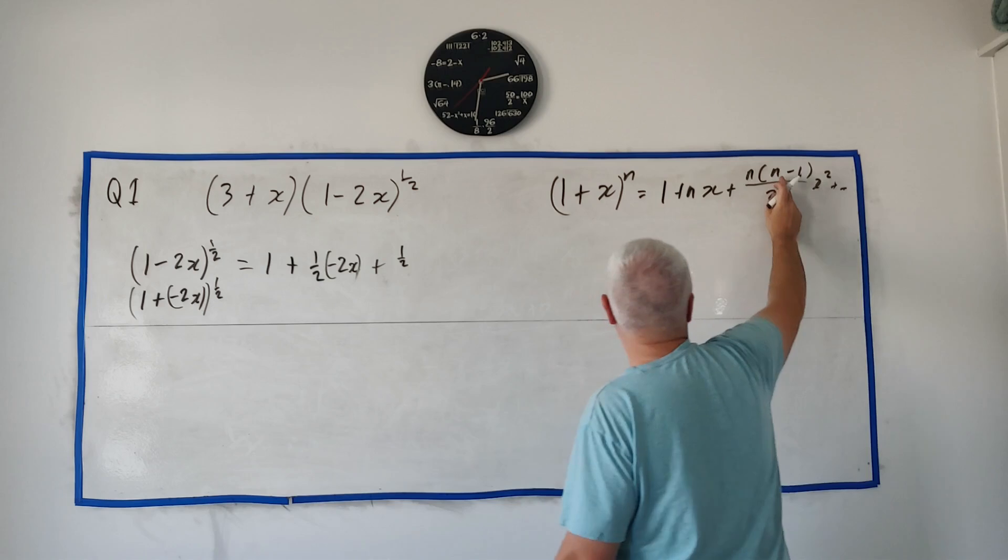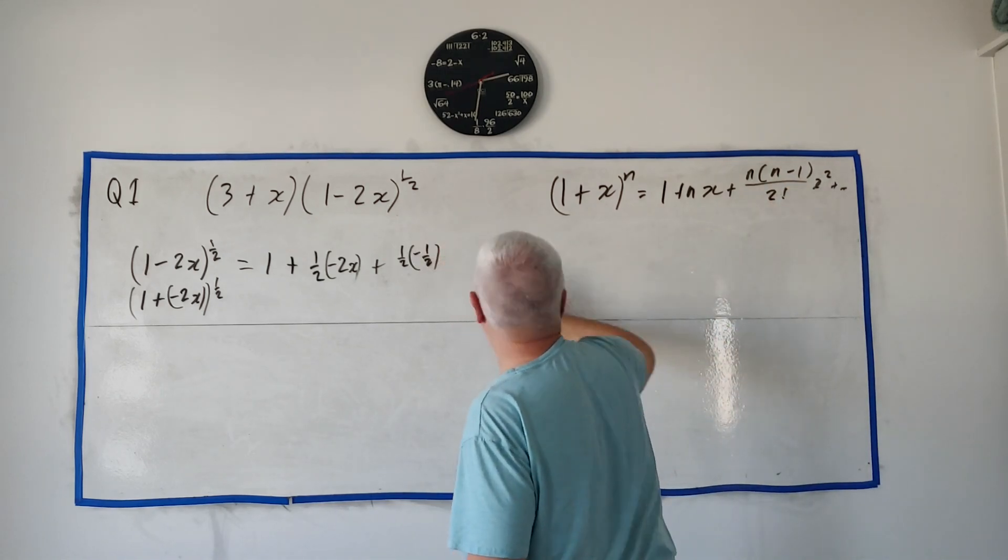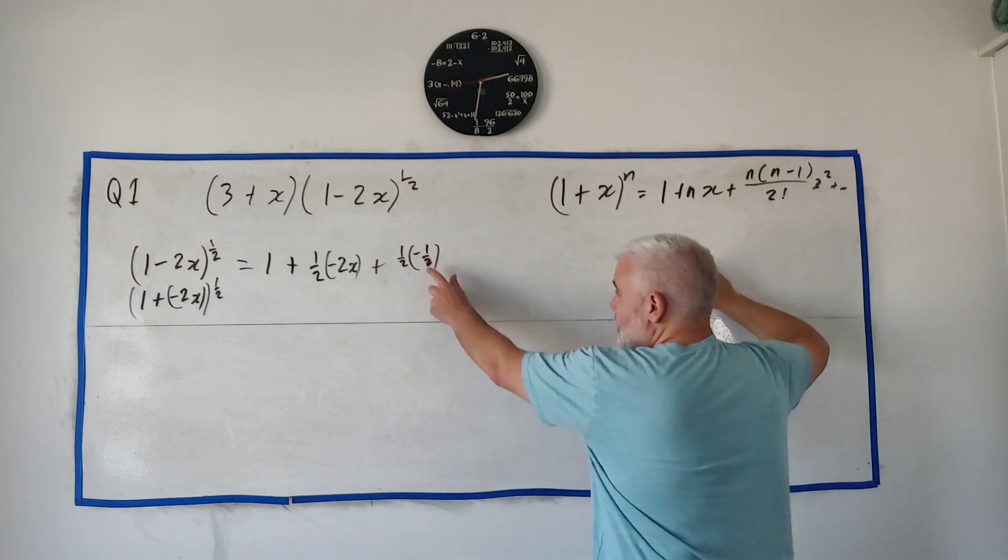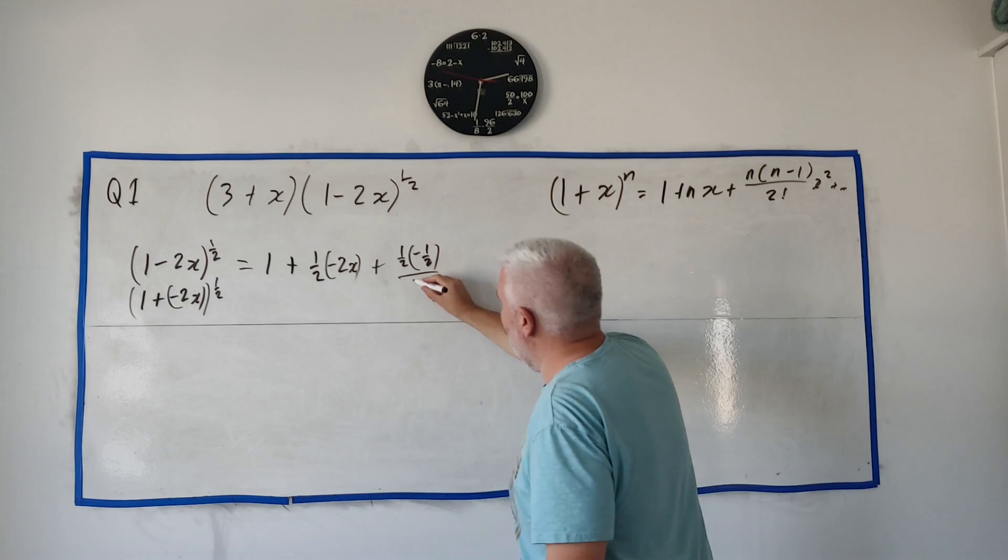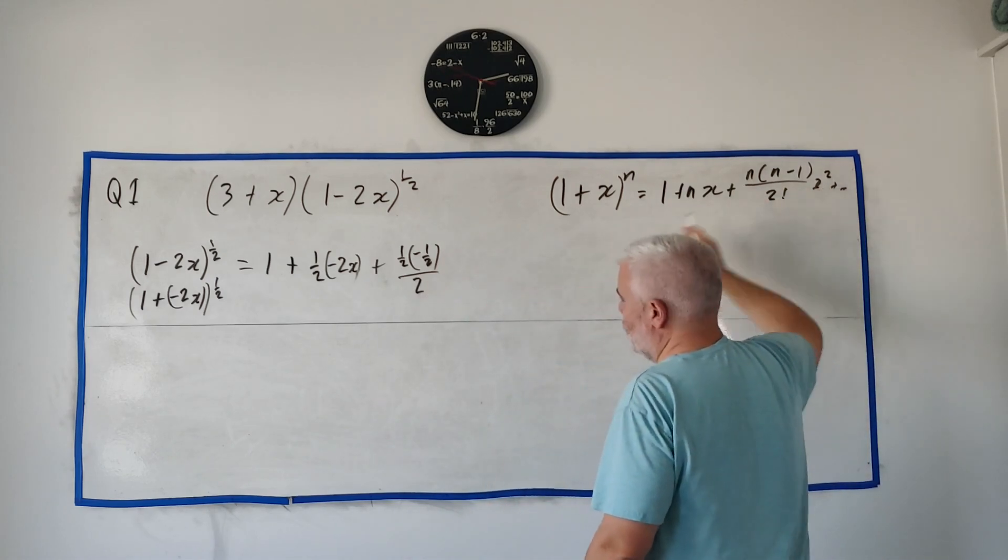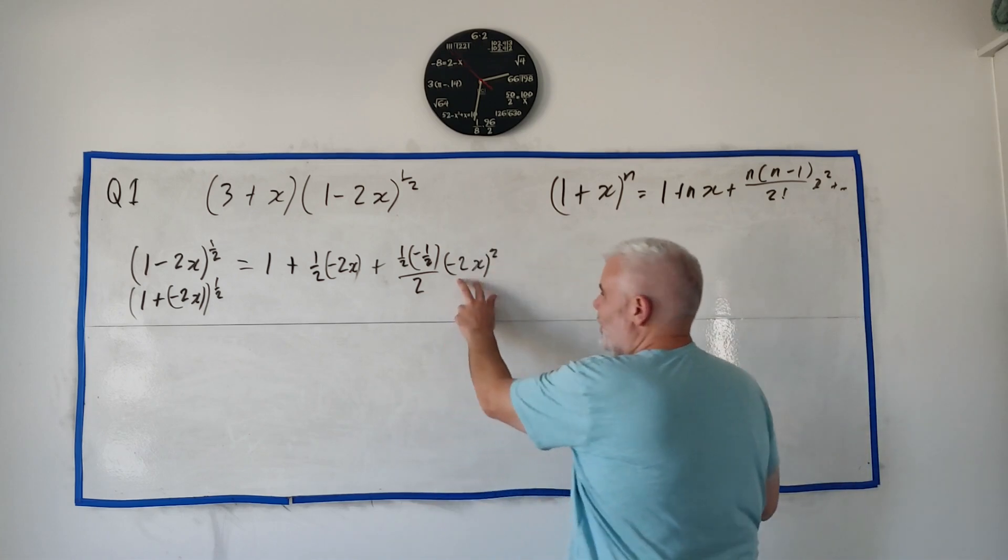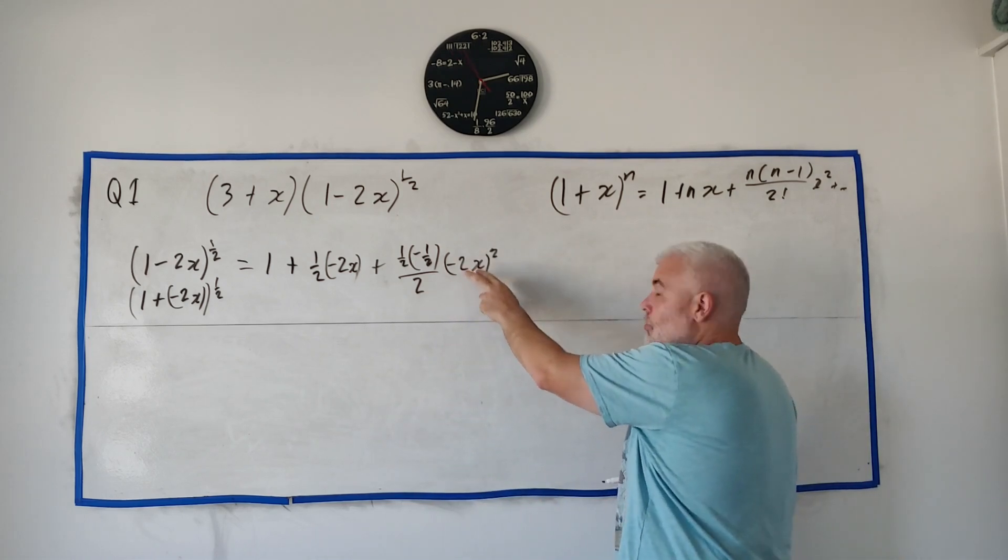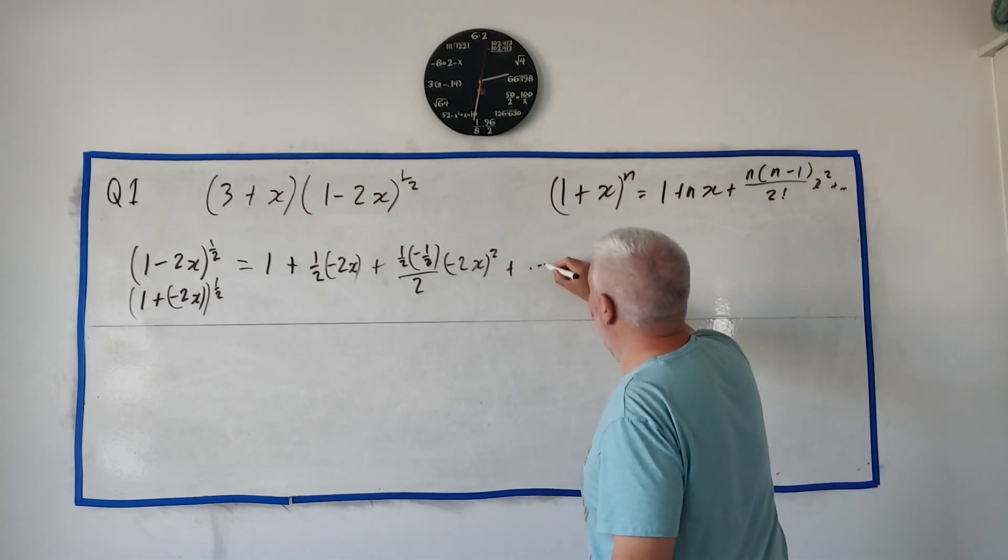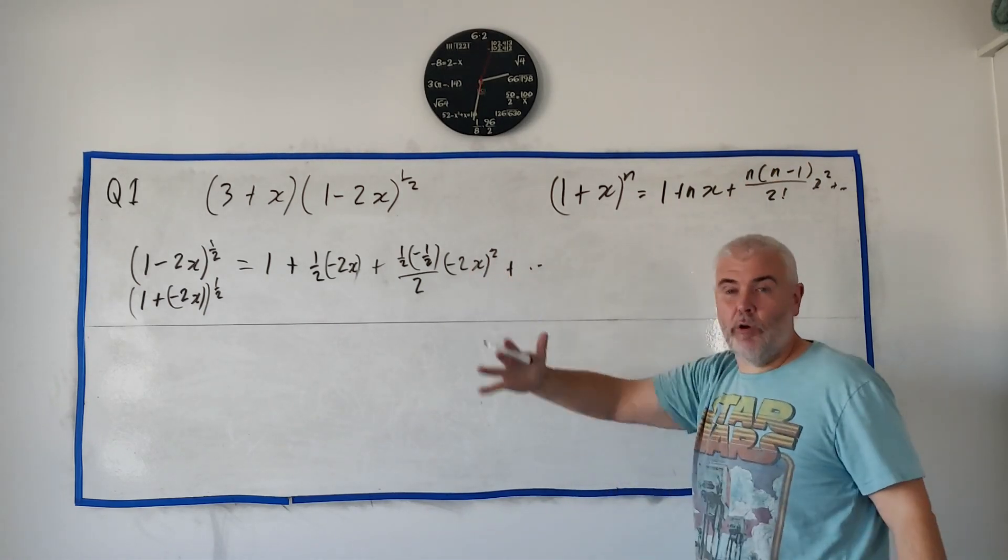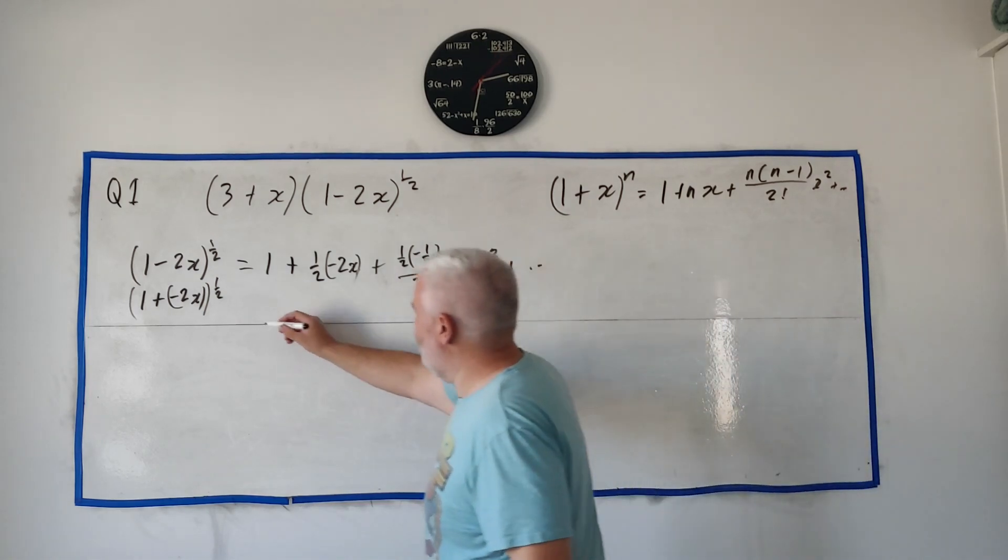And then plus, we have a half multiplied by a half minus 1. Let's do a little work ahead. A half minus 1 is minus half. Divided by 2 factorial, that's 2 times 1, which is 2. And x squared, which again is minus 2x squared, all squared. It's easier to see here that we're just putting in minus 2x everywhere there's an x. And this does going on, but again, we don't need it for reasons I just explained.